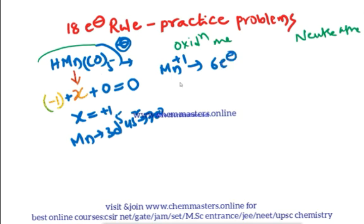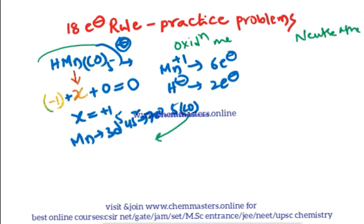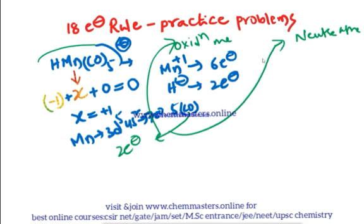The one hydride ligand contributes 2 electrons in the oxidation state method. The five CO ligands each contribute 2 electrons, giving 10 electrons from CO. Total: 6 + 2 + 10 = 18 electrons. So HMn(CO)₅ is an 18-electron complex by the oxidation state method.